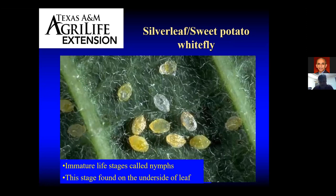This is that immature nymph stage I mentioned. As you can see, it looks totally different than the adult stage. You wouldn't even suspect these would develop into an adult whitefly, but they do. They're sessile or immobile. Once they're there, they're basically attached to the underside of the leaf with their piercing and sucking mouth parts, drawing plant juices for nourishment. You're going to find this stage exclusively on the underside of the leaves. The adult whiteflies will try to be on the underside as well, but you could see them on top of the leaves too.